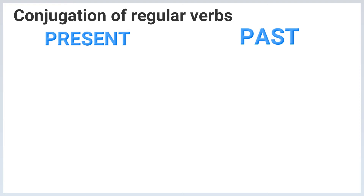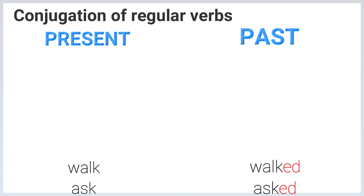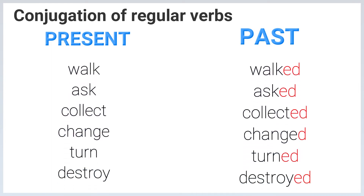Conjugation of Verbs. Regular Verbs — Present, Past: Walk, Walked. Ask, Asked. Collect, Collected. Change, Changed. Turn, Turned. Destroy, Destroyed.